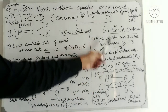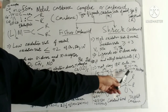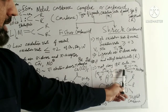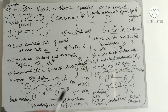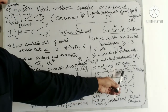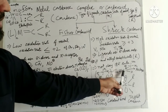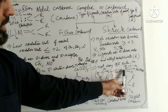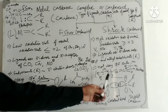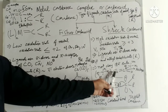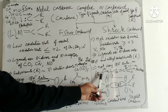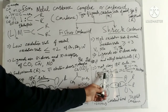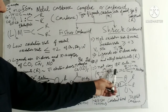This is the example of Schrock Carbenoid. In this case, you can see these substituents are sigma donors — tert-butyl and hydrogen. The electronegativity of this carbene carbon is greater than that of the metal, so that is why this carbon is nucleophilic in nature in the case of Schrock Carbenoid. The ligands here are sigma electron donors only, and three neopentyl ligands are attached to this metal.